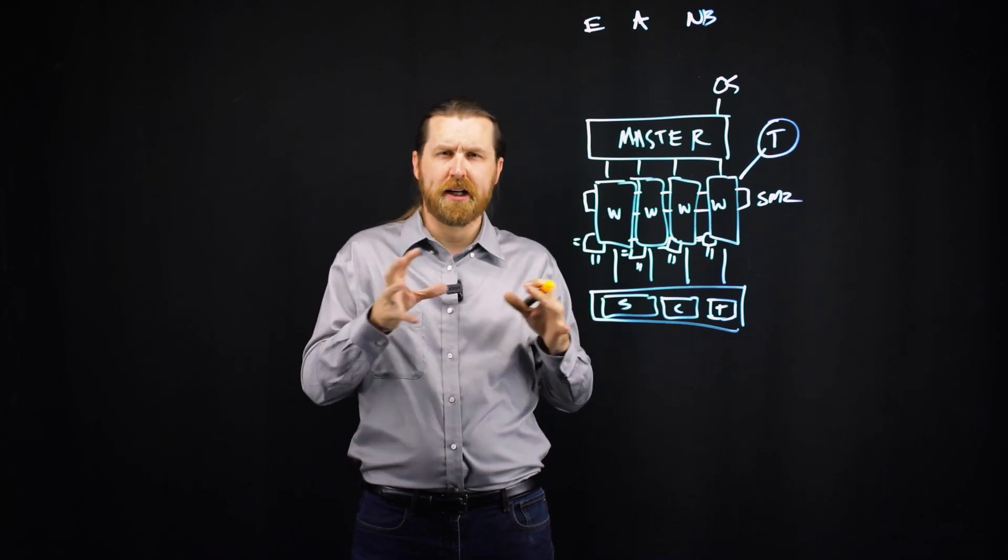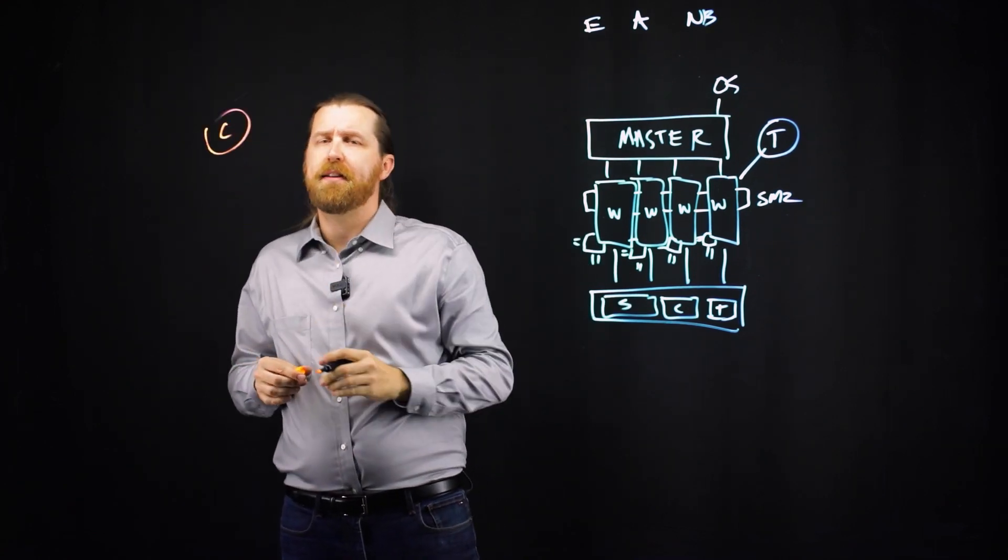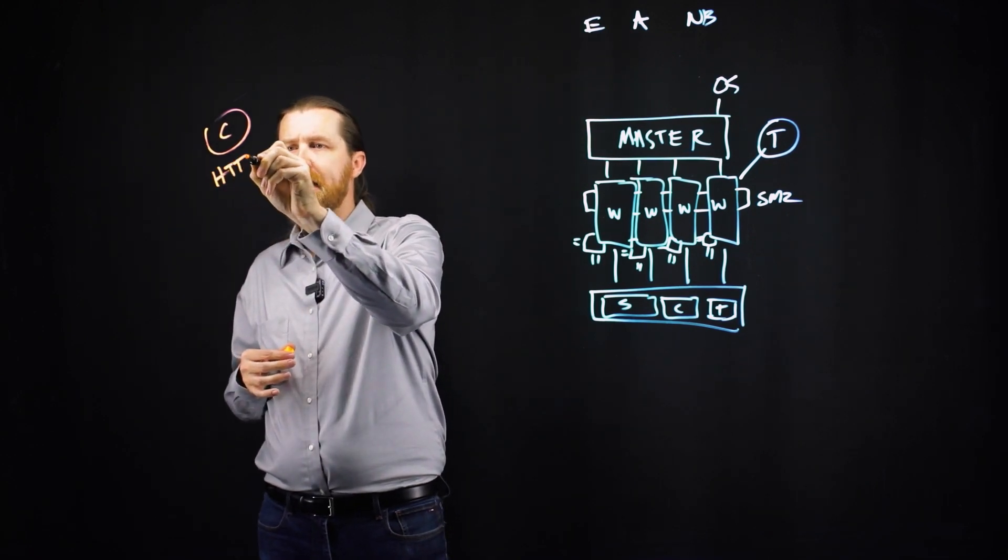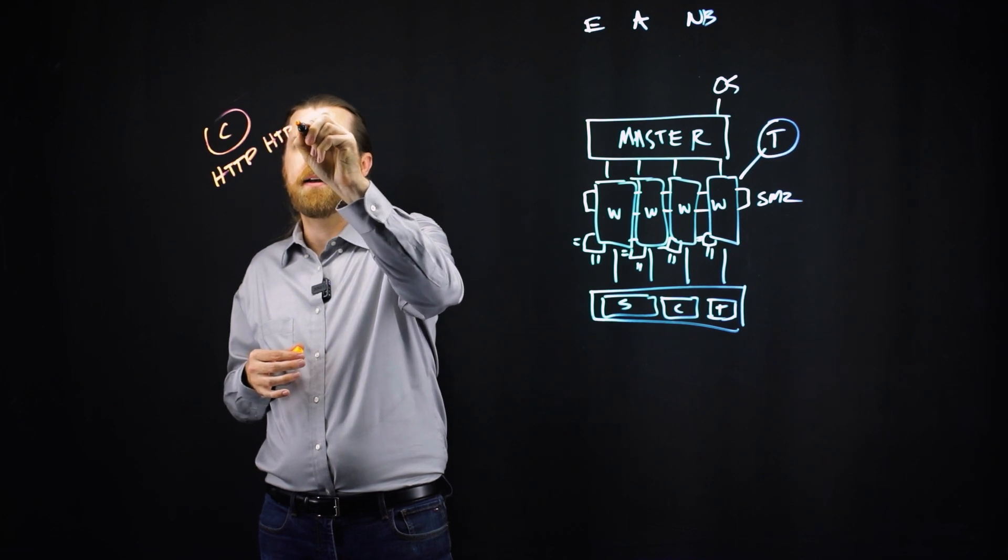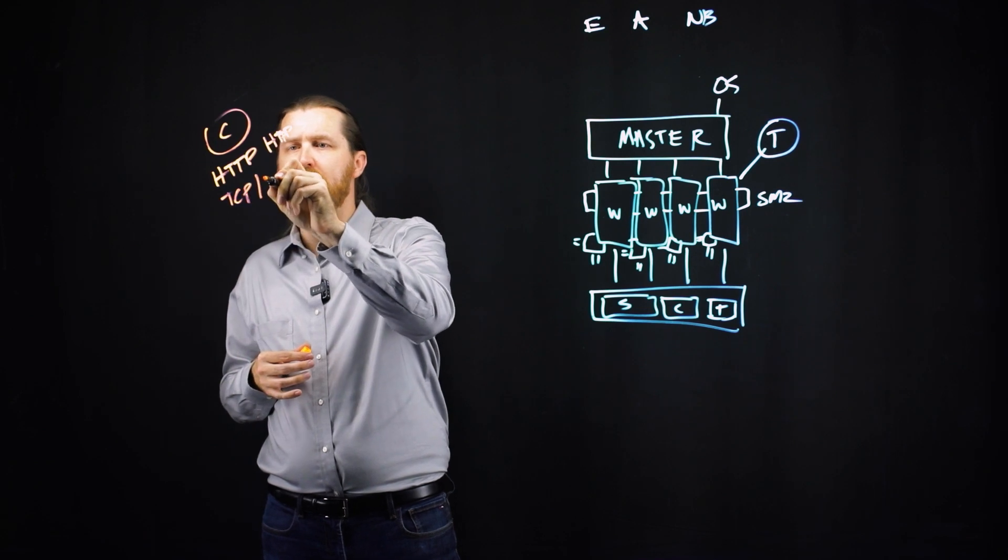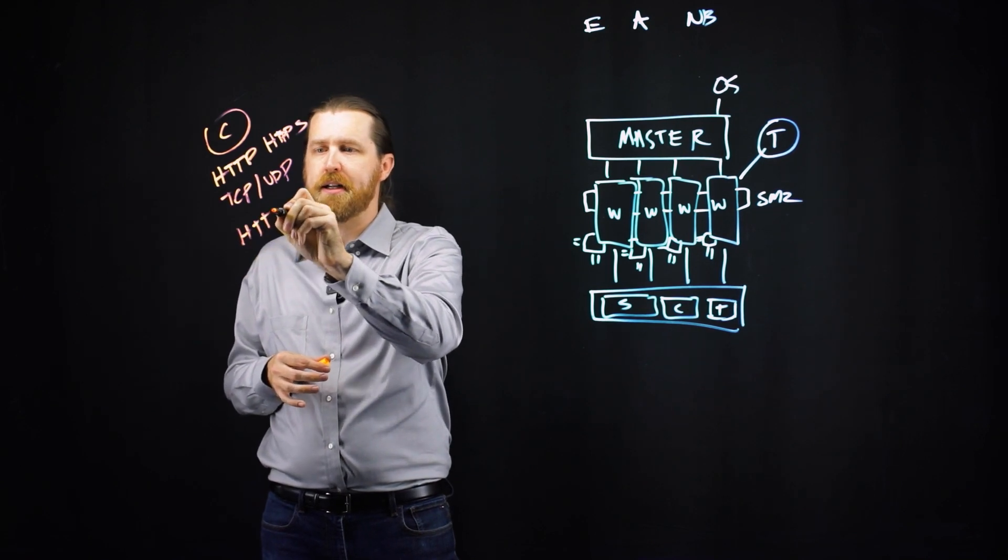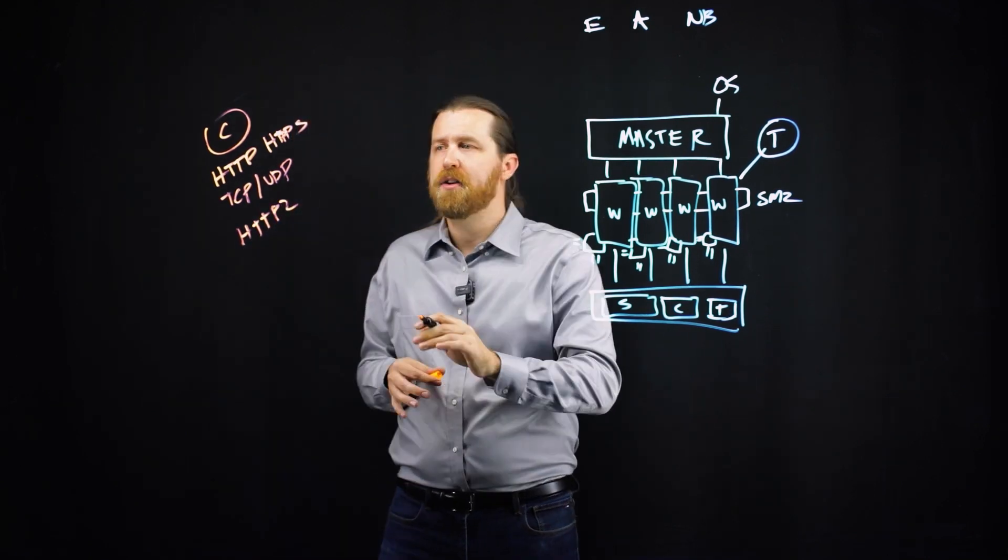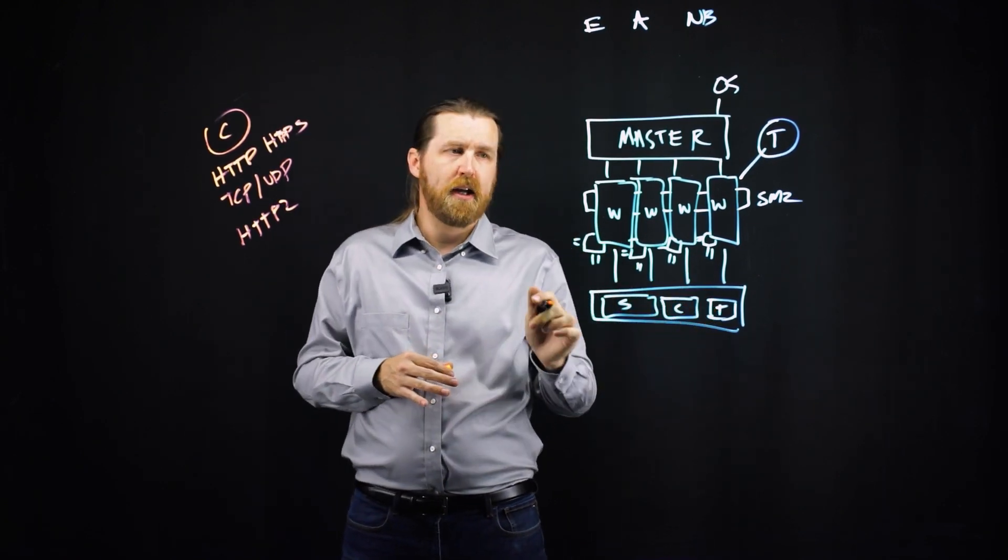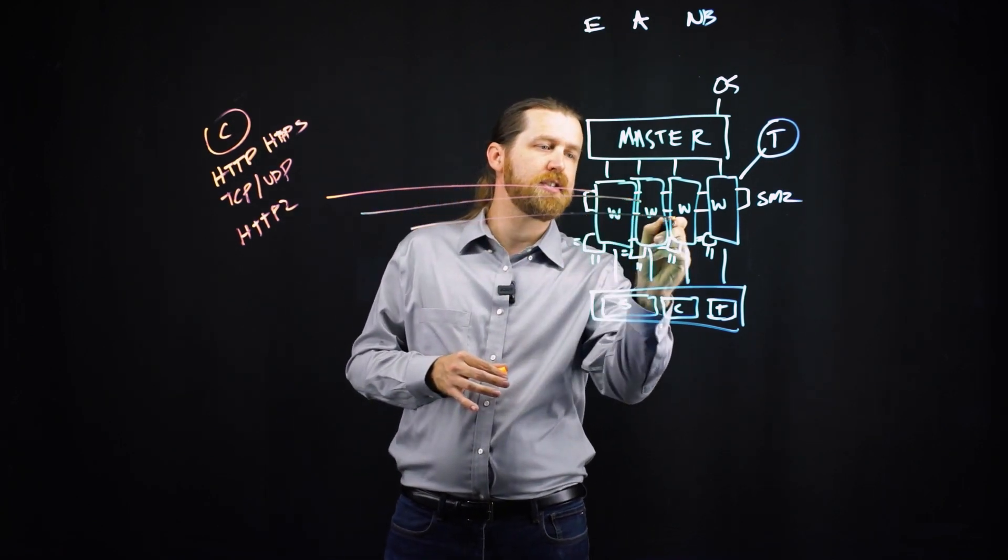But how does it work when it comes to connections and actual connection handling? So you might have clients that are over here. And these clients usually want to talk over a certain protocol. So they might want to talk like HTTP or HTTPS. They might also want to talk like TCP or UDP, or some other complex, they might want to talk HTTP 2. And so it's important that these clients need to be able to come in, and these workers need to handle that. And so by default, the workers actually will take turns accepting these connections as they come through.